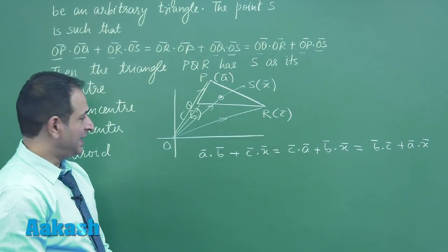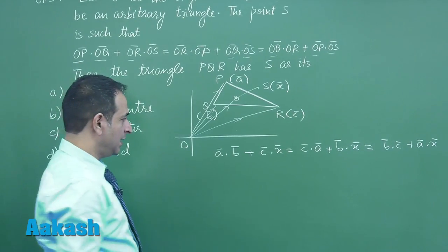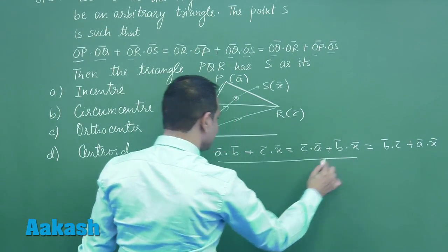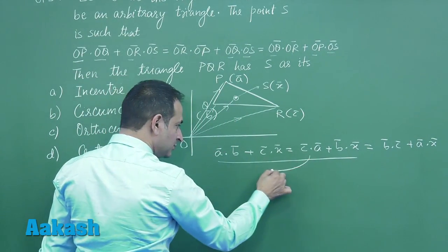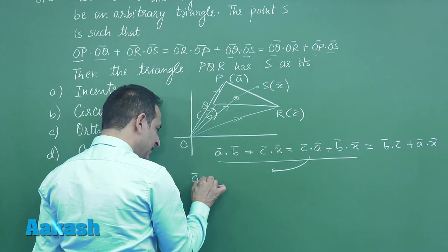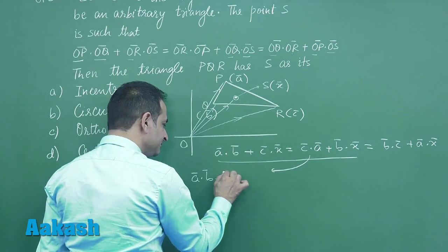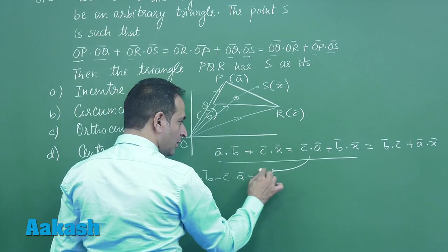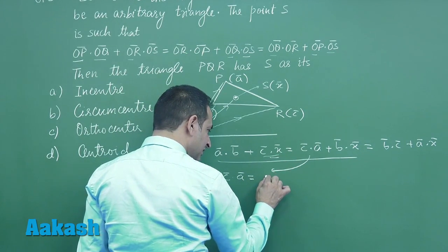Now let us see: x is a variable position vector. Equating these two first - if we take this term on the left-hand side and this term on the right-hand side...